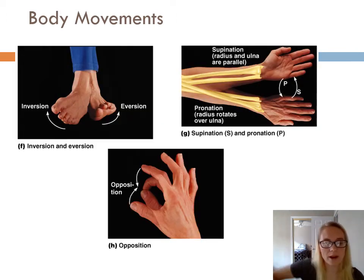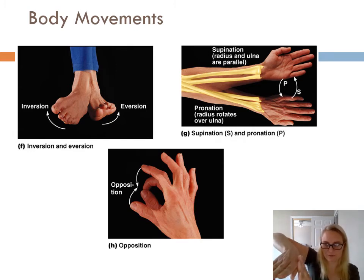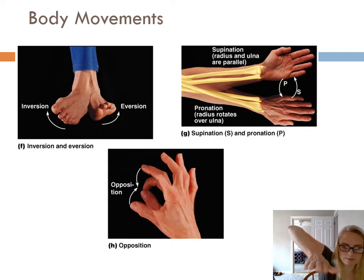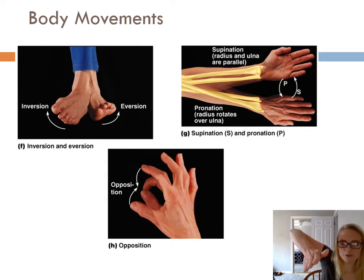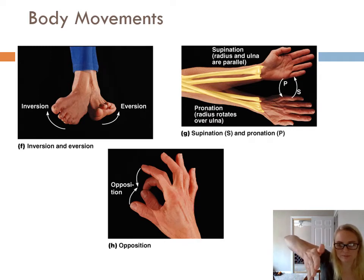We have another pair at the foot. The inner surface of the foot — the medial surface, where your big toe is like where your thumb is. Inversion is pointing the bottom of your foot toward the midline. Eversion is pointing it out.